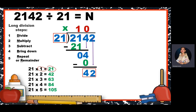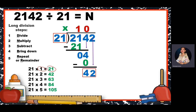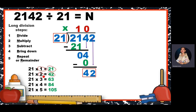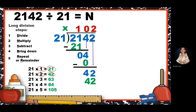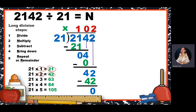42 divided by 21. Looking back at our skip counting, we can see 42, which equals 21 times 2. So 2 goes up in the quotient, and 21 times 2 is 42. Subtract: 42 minus 42 is 0. There are no more digits after 2, so that's the final answer: 102.